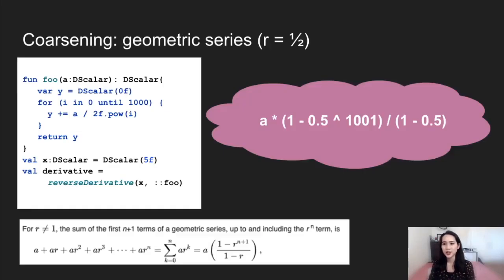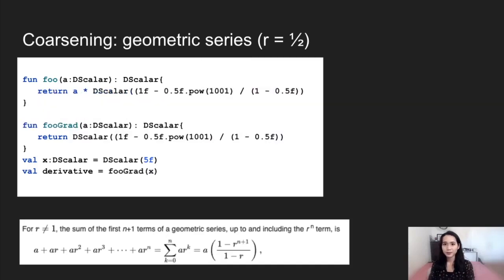Now let's revisit the geometric series function. With coarsening, we're able to consider the entire function's computation and recognize certain patterns. Coarsening can transform loops into summations and even simplify summations further. Here we can use a property of geometric series to simplify the foo function and then take the derivative of this simplified function. Here are the functions generated by our coarsening optimization: the primal computation and the gradient computation. We have arrived at the primal computation through a closed-form geometric series property, and the gradient was computed symbolically from this.